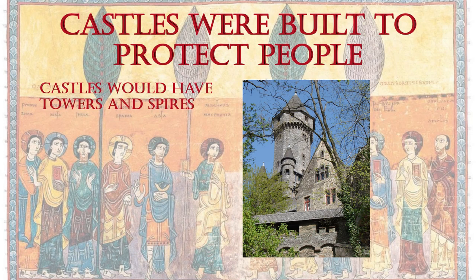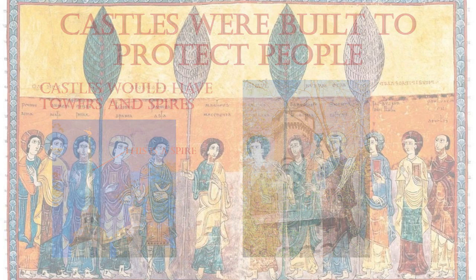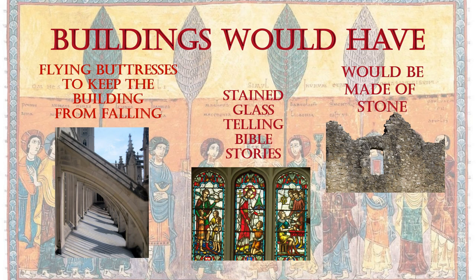Castles were built to protect people. Castles would have towers and spires. Buildings would have flying buttresses to keep the building from falling. Stained glass told Bible stories, and buildings would often be made of stone. Most houses were of wood and thatch. Thatch is a roof made of plants.